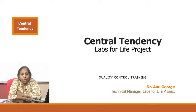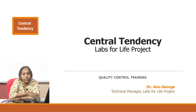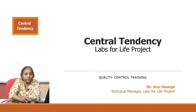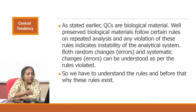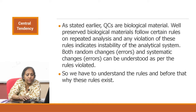We will continue the discussion on statistical controls in this series. The first concept we have to understand is central tendency. QCs are biological materials, and well-preserved biological materials follow certain rules on repeated analysis. Any violation of these rules indicates instability of the analytical systems. Both random changes and systematic changes can be understood as per the rules violated. We have to understand the rules, and before that, we have to understand why these rules even exist.